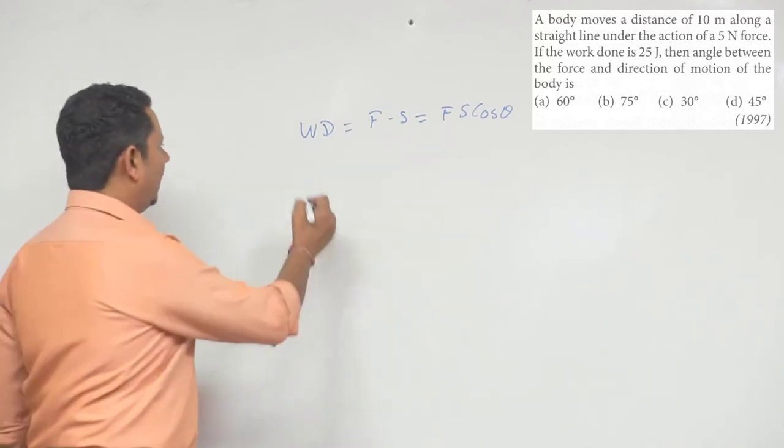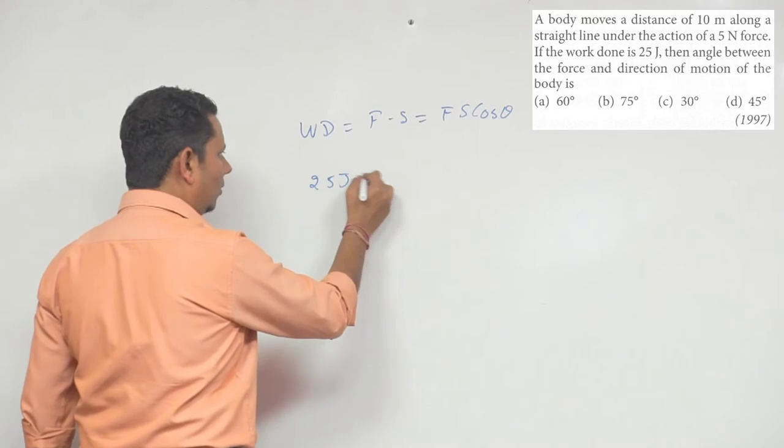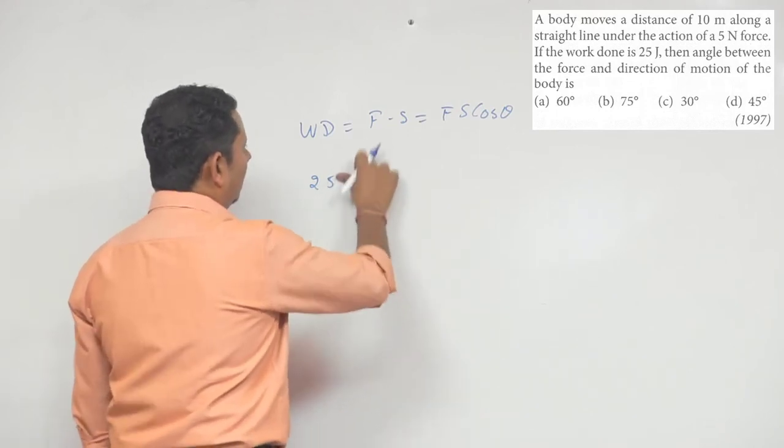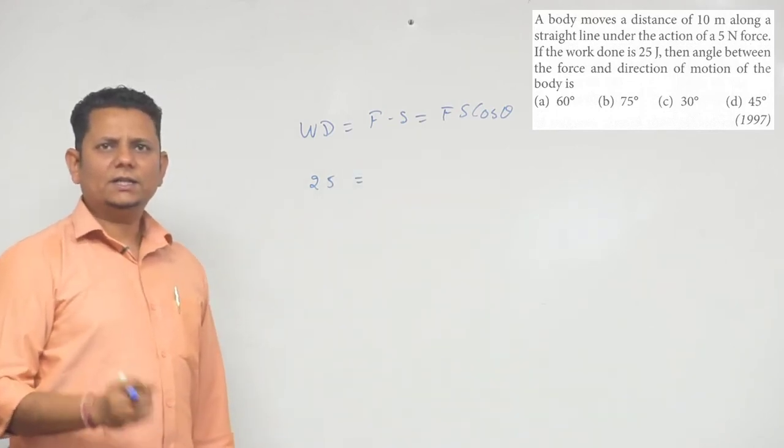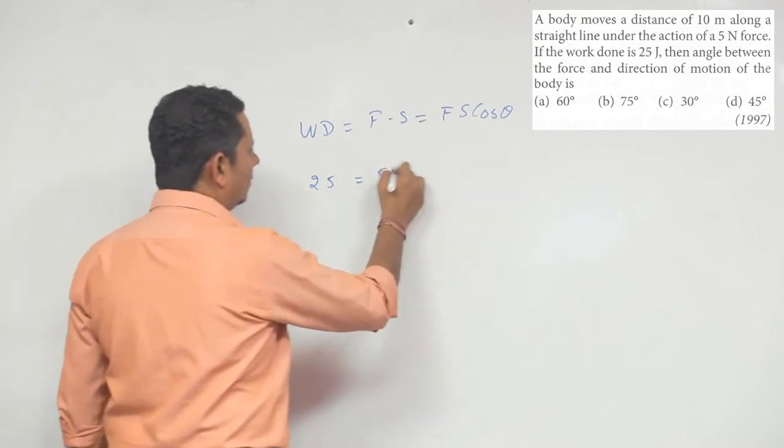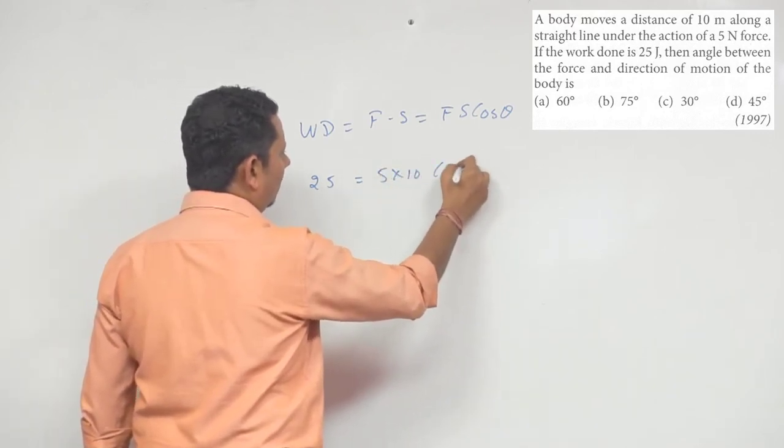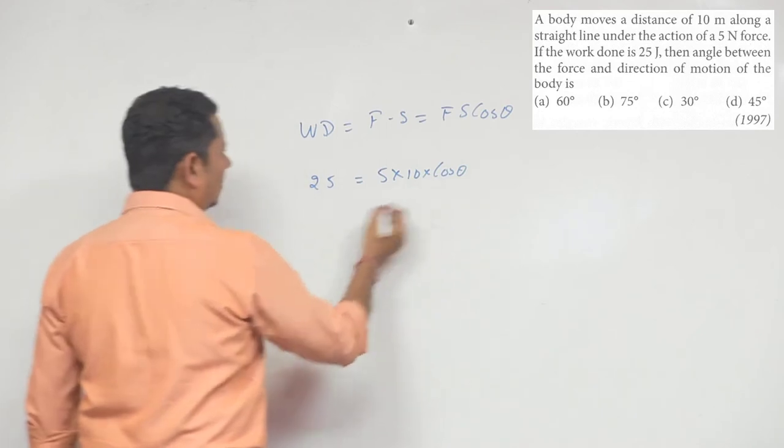The work done is 25 Joules and the force value is 5 Newtons. So we have 5 multiplied by 10 multiplied by cos θ. If we solve it,